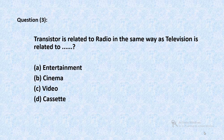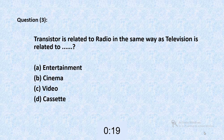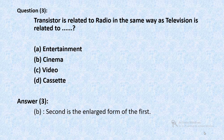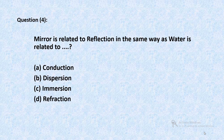Question 3: Transistor is related to radio in the same way as television is related to — entertainment, cinema, video, or cassette? The answer is B. The second is the enlarged form of the first.